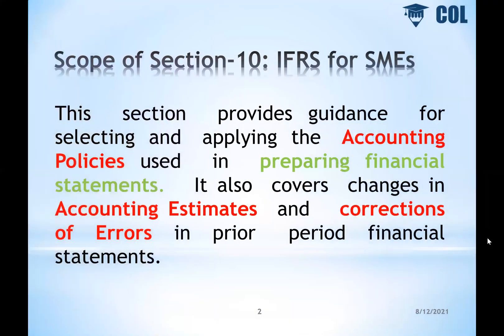We will discuss what is the scope of Section 10 of IFRS for SME. This section provides guidelines for selecting and applying the accounting policies used in preparing financial statements. It also covers changes in the accounting estimate and correction of errors in prior period financial statements. The previous financial statements will be taken to correction.